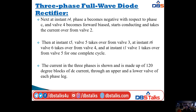At instant t4, phase A becomes negative with respect to phase C and valve four becomes forward biased, starts conducting, and takes the current over from valve two. At instant t5, valve five takes over from valve three; at instant t6, valve six takes over from valve four; and at instant t1, valve one takes over from valve five for one complete cycle. The current in the three phases is made up of 120-degree blocks of DC current through an upper and lower valve of each phase leg.